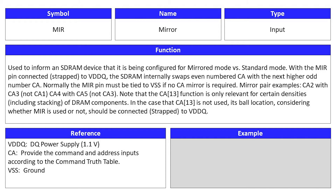Mirror is an input signal and its symbol is MIR. This signal is used to inform an SDRAM device that it is being configured for mirrored mode versus standard mode. With the MIR pin connected or strapped to VDDQ, the SDRAM internally swaps even numbered CAs with the next higher odd number CA. Normally, the MIR pin must be tied to VSS if no CA mirror is required. Mirror pair examples include CA-2 with CA-3, not CA-1, and CA-4 with CA-5, not CA-3.